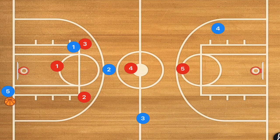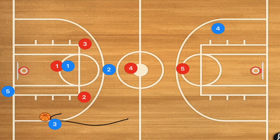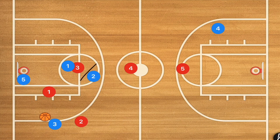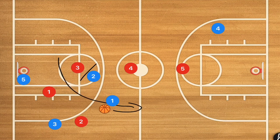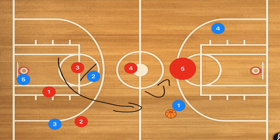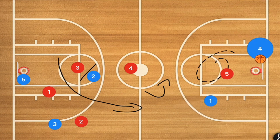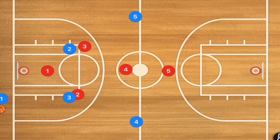If this was set up against a diamond 1-2-1-1 press, player one would originally act like he's trying to get the ball, but player three gets it anyway. Player five goes inbound. You'd then see defenders trying to trap player three. Player two sets a screen, player one uses that screen, player three passes to player one. Player one can then set up the offense or go two-on-one against player five, which should result in a basket.